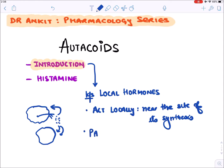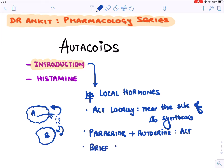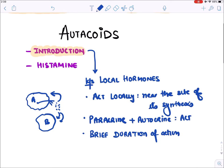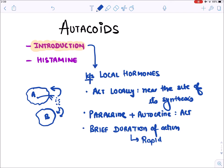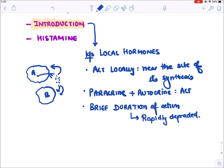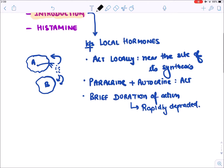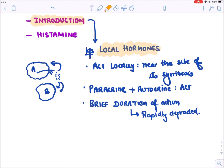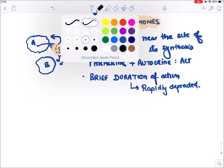They act in a paracrine or autocrine fashion — paracrine means acting on an adjacent cell, autocrine means acting on the same cell. They have a very brief duration of action because they get rapidly degraded. That is why they are also known as local hormones: synthesized, rapidly degraded, and act locally.